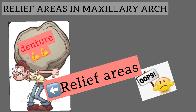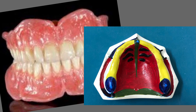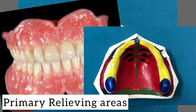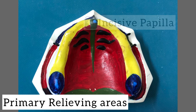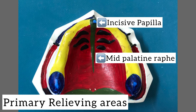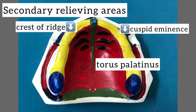These areas may easily resorb under constant load or may contain nerves or blood vessels. Just as the name suggests, these are areas that require relief from masticatory load — that is, the denture has to be fabricated in such a way that load is not concentrated in these areas. The primary relieving areas in the maxillary arch are the incisive papilla and the mid palatine raphe.